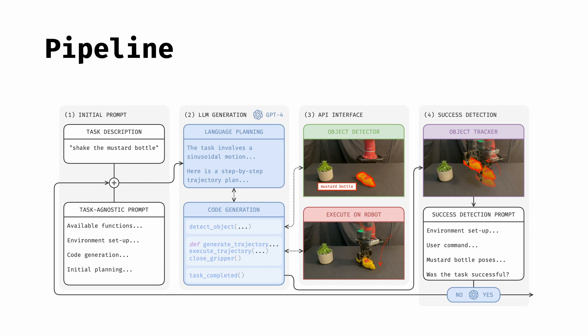After task execution, we use an object tracker to track the segmentation maps over the entire duration of the task. The segmentation maps, along with the task-agnostic success detection prompt, are then provided to the LLM to determine whether the task was executed successfully or not. If yes, the user can provide another task for the LLM to execute.